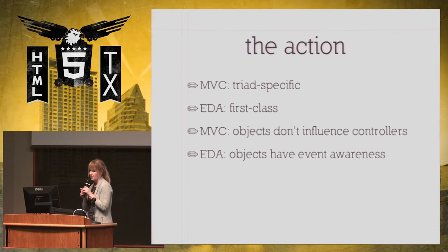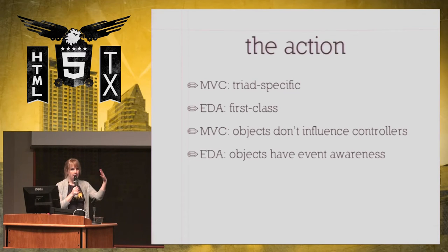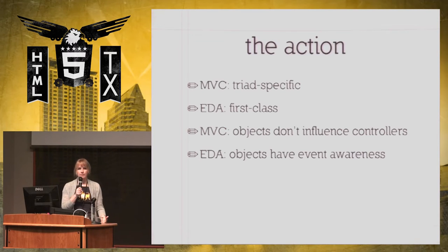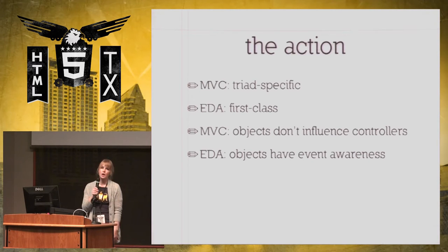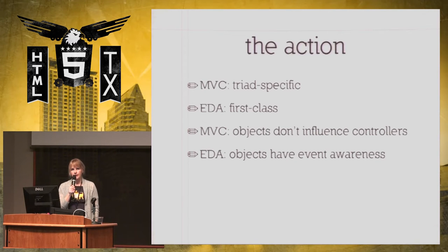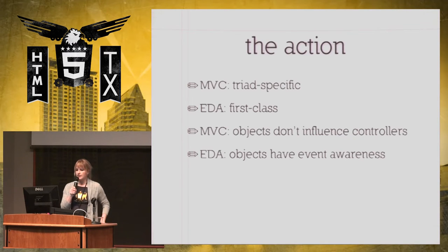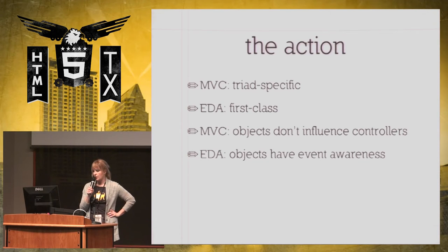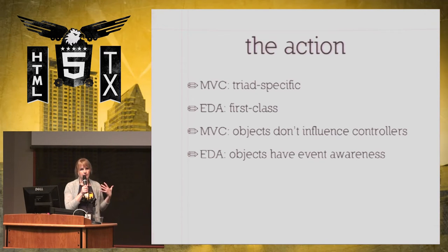Where the action happens: in MVC it's all pretty triad-specific, so things tend to happen within their model-view-controller segment. In EDAs, you wouldn't want events confined to a specific set of models, views, and controllers — you'd want them available to everything, because anybody can subscribe to an event and do anything they want with it. In MVC you don't have your objects influencing your controllers — it generally works the other way around. In EDA, your objects would be aware of events and able to listen to them, much like a view would observe a change in a model.